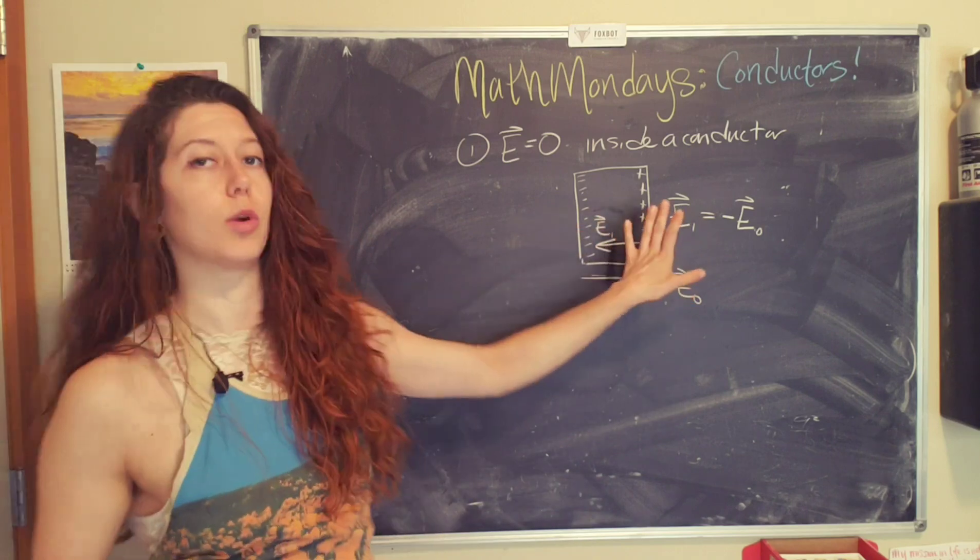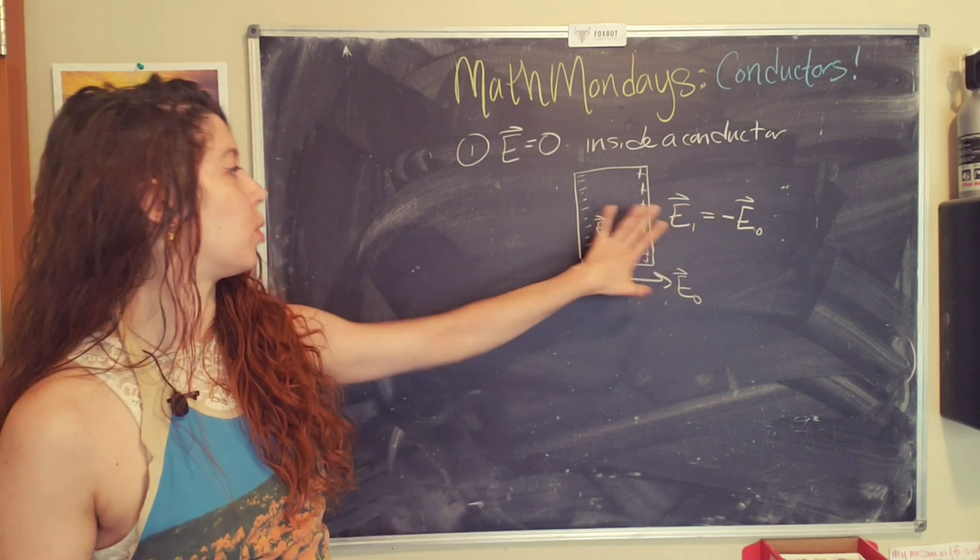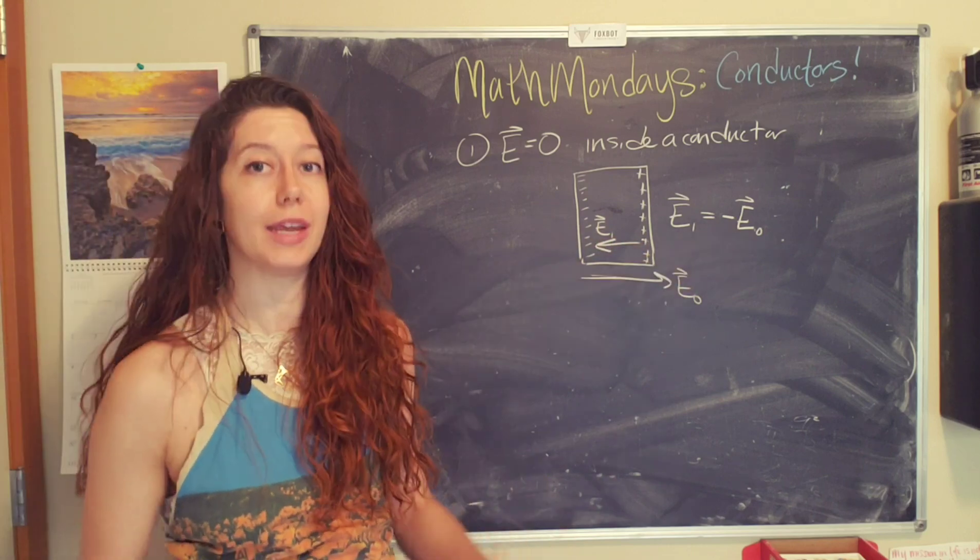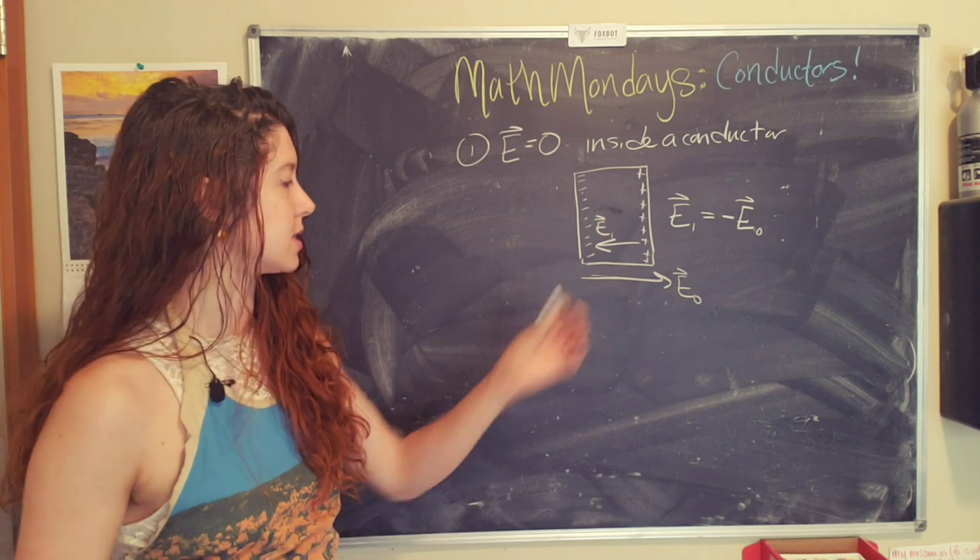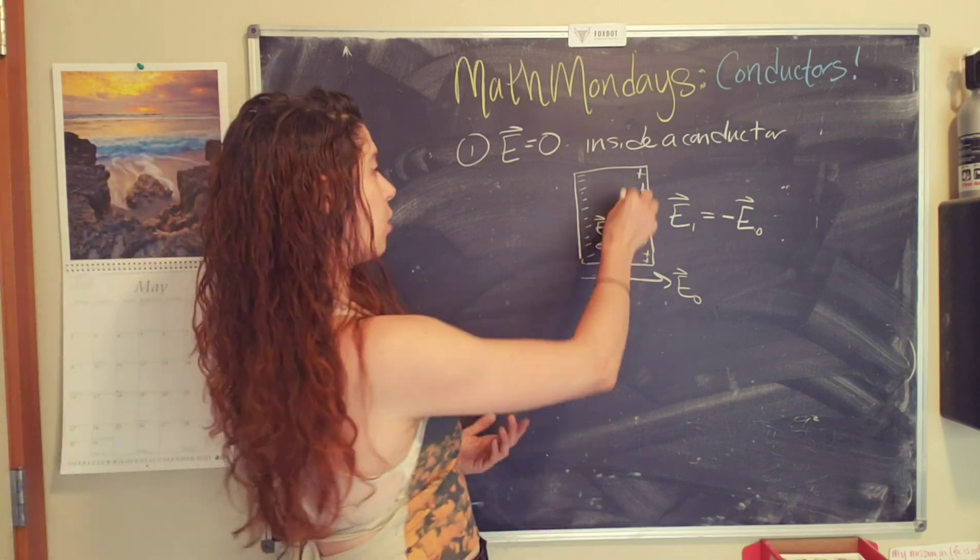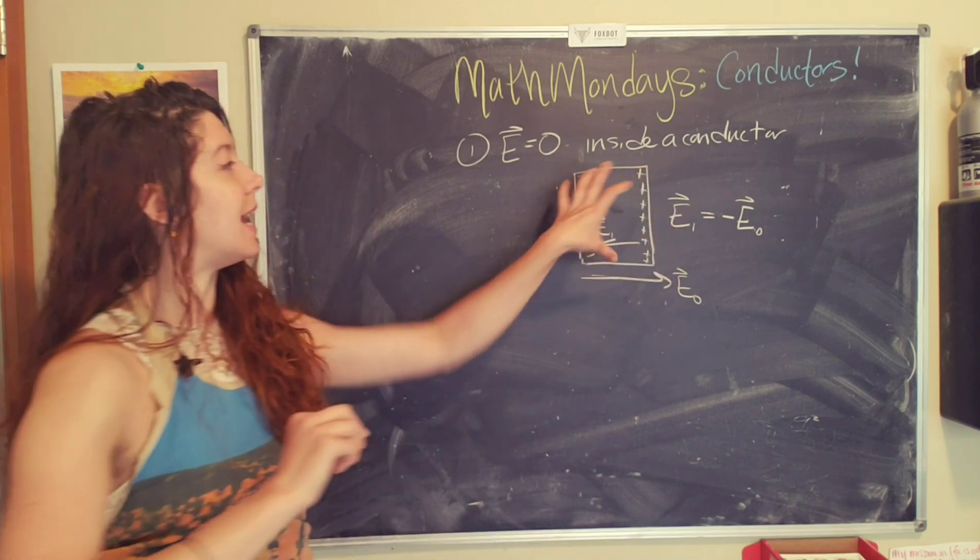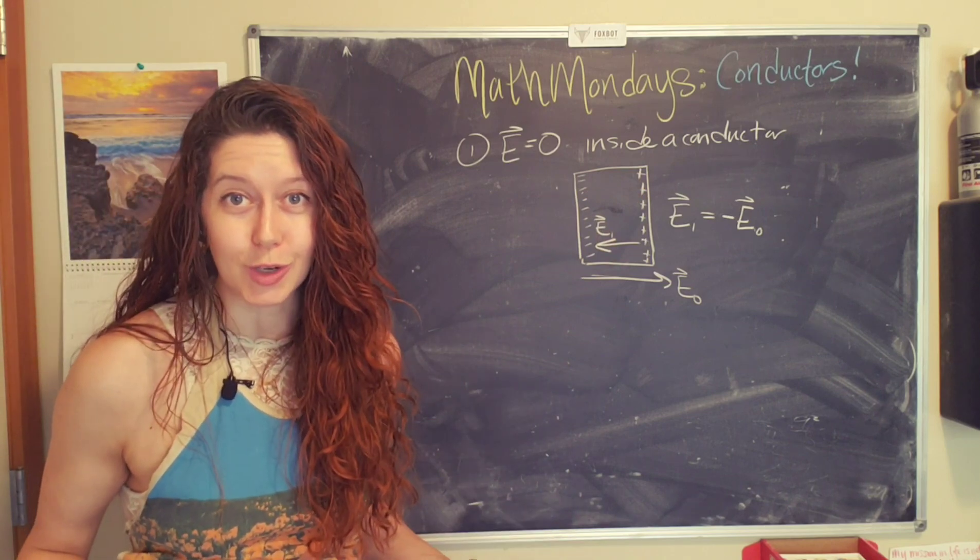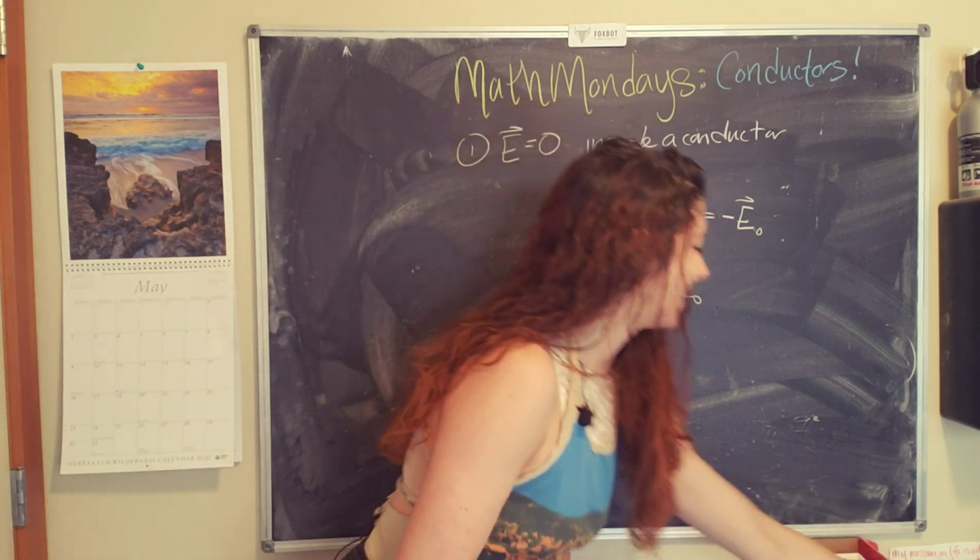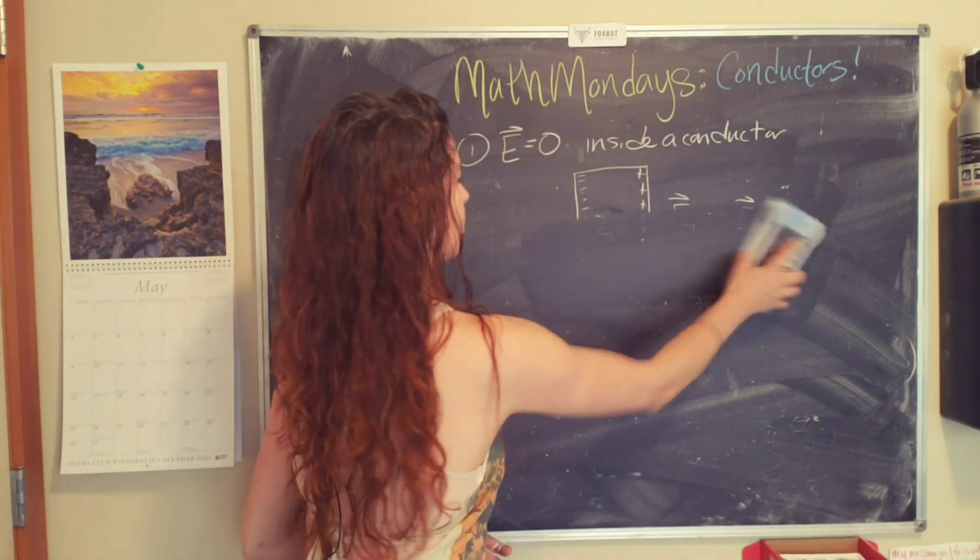The universe likes to be stable and reach equilibrium. And so that is what happens. And so now you end up with a net electric field of zero inside the conductor. So cool. Okay. All right. So that is property number one.